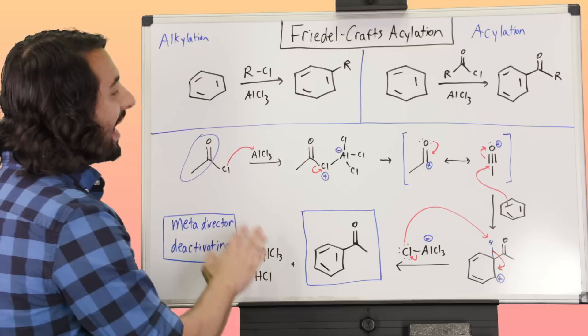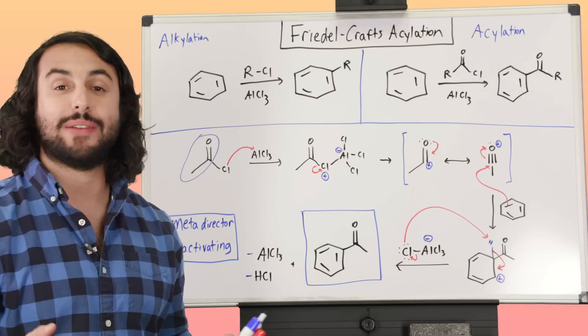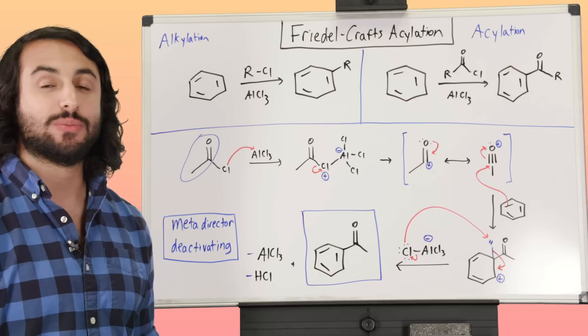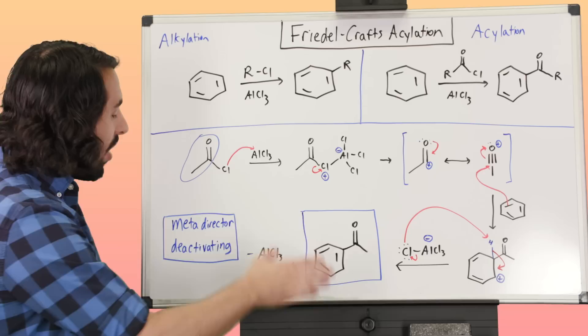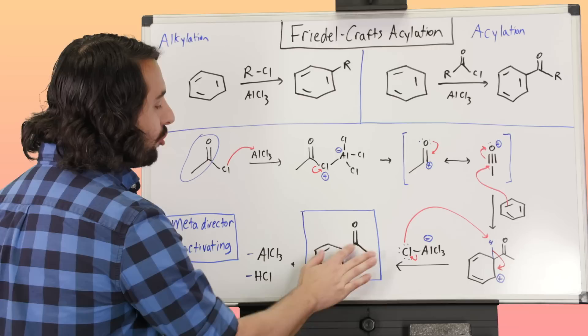So that is our mechanism for Friedel-Crafts acylation, and it's very similar, as we said, to the Friedel-Crafts alkylation. And then one thing we want to say about our product, if we are going to continue and do more EAS reactions with this product, once again we want to be aware that this group is meta-directing and deactivating because of the way it withdraws electron density up into that carbonyl group. So that's what we need to know about Friedel-Crafts acylation.